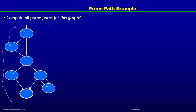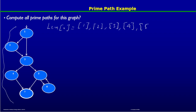First we need to compute all the simple paths on this graph. We'll start with paths of length 0. Paths of length 0 are the nodes themselves: node 1, node 2, node 3, node 4, node 5, node 6, and node 7. You can put an exclamation mark next to node 7 because it is the final node.